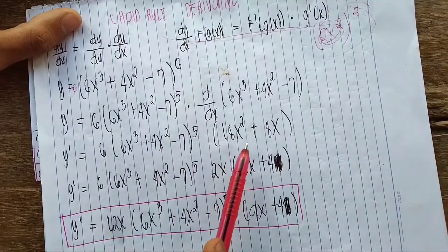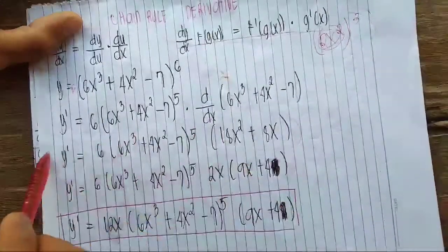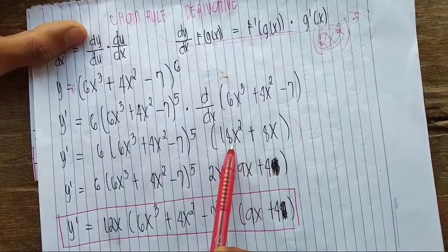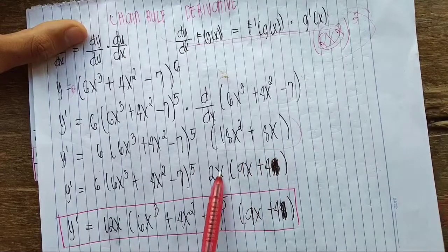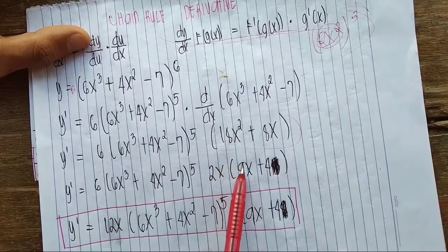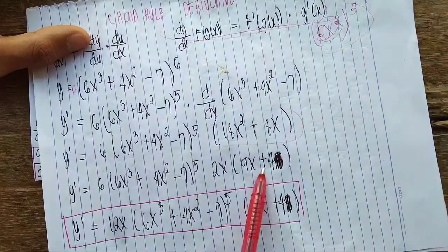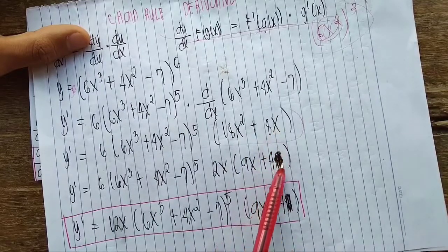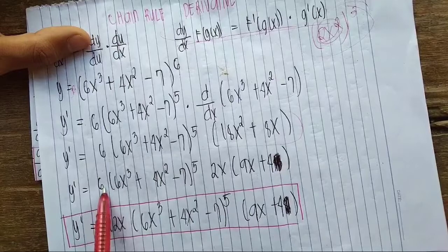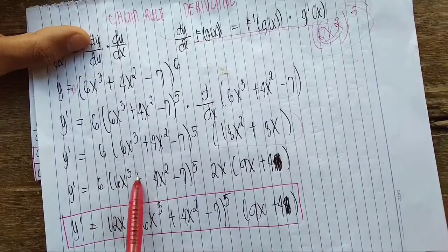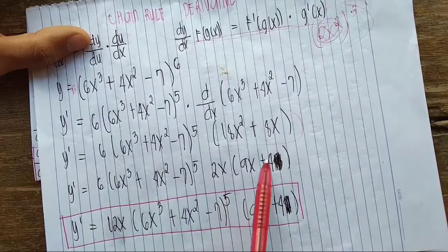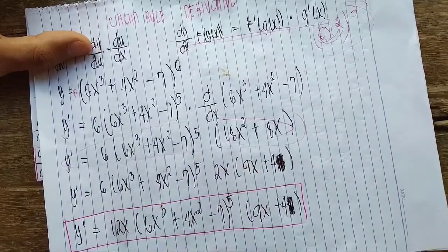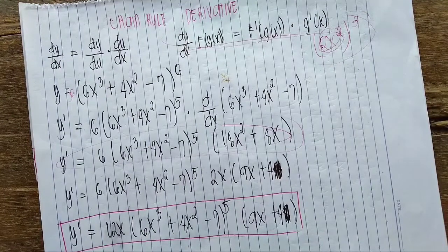Multiplying those two terms together gives us our answer, but we can simplify further. Notice that 18x² + 8x has a common factor of 2x. Factoring out 2x gives us (9x + 4), because 9x times 2x = 18x² and 4 times 2x = 8x. So the final answer is 12x(6x³ + 4x² - 7)⁵(9x + 4). This is the chain rule for our basic example.